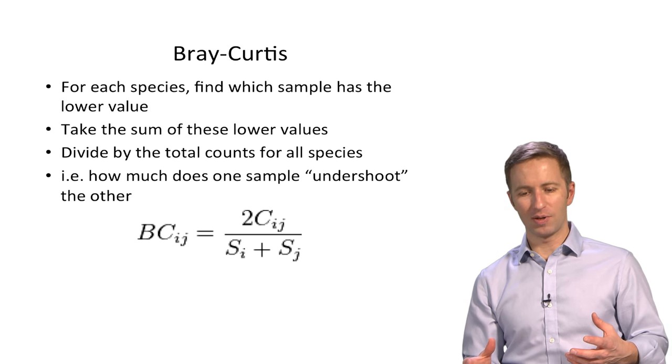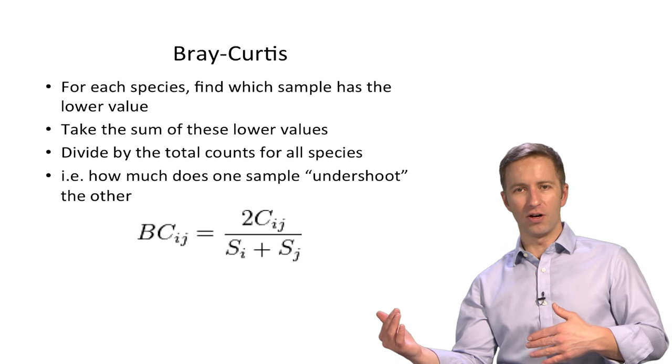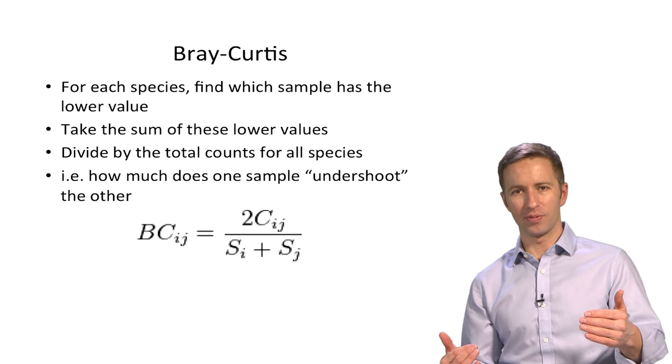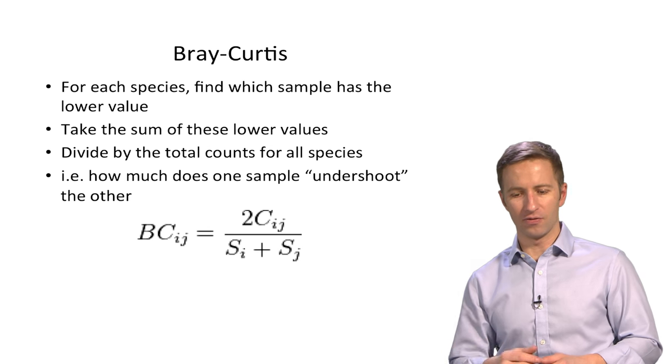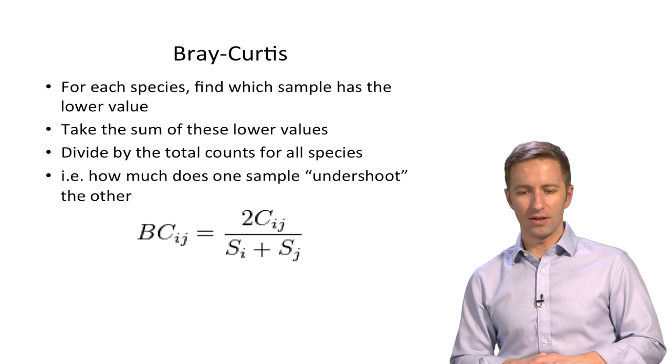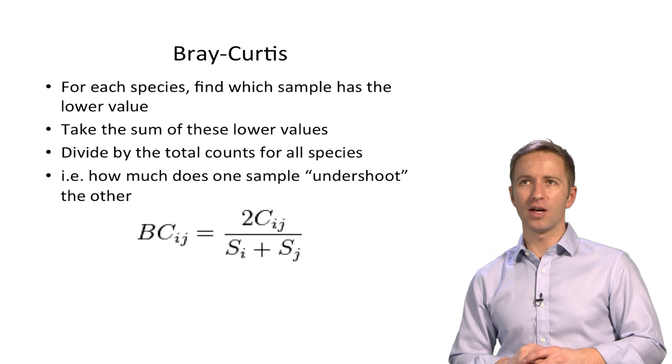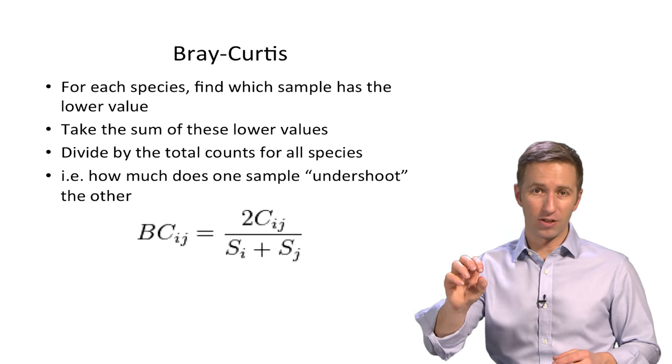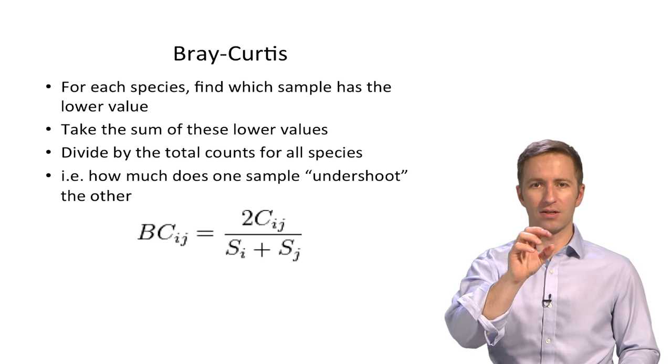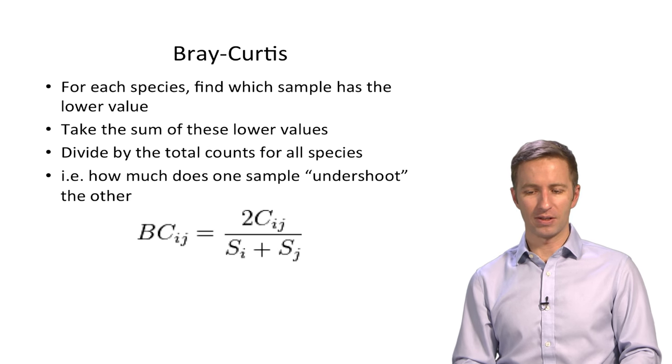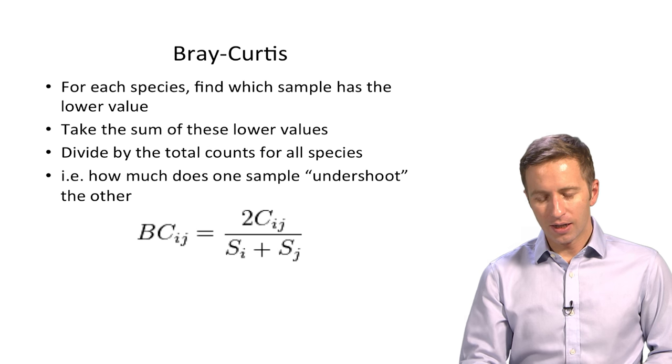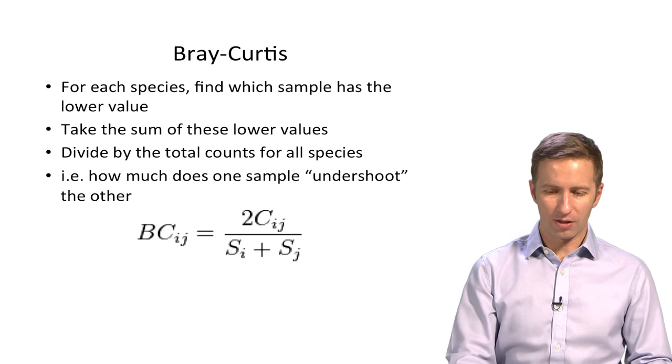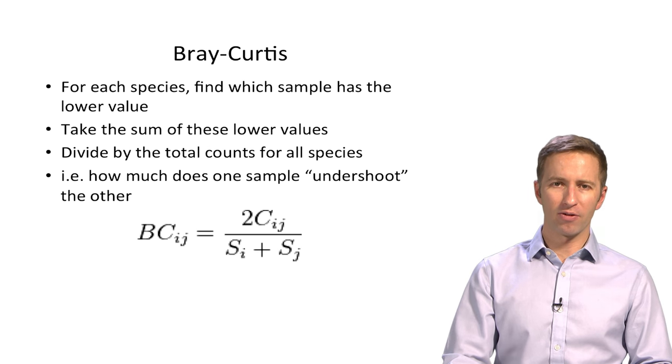And then you divide by the total count for all of the species in each of the samples. So Bray-Curtis, the way I think of it, is how much does one sample kind of undershoot the other sample in terms of the abundance of a bug. And so it's the sum of all of the lowest values for all of the species divided by the total sum of all the species.